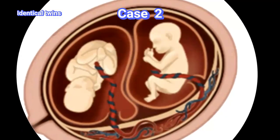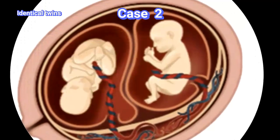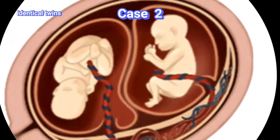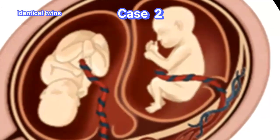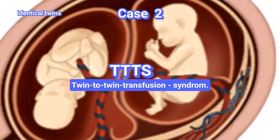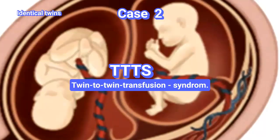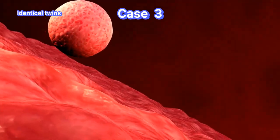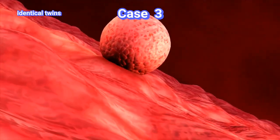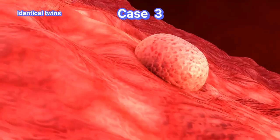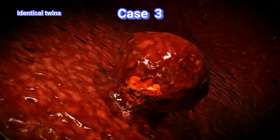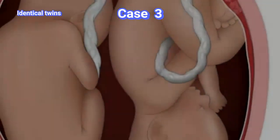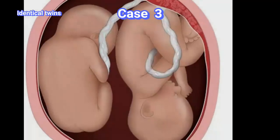As shown here, the twins have separate amniotic sacs but share the same placenta. One complication that may arise when twins share the same placenta is twin-to-twin transfusion syndrome, which will be covered in another video. The last case is when the blastocyst travels to the uterus and begins implanting itself into the inner lining, then splits late in the implantation process, resulting in identical twins that share both the amniotic sac and the placenta.